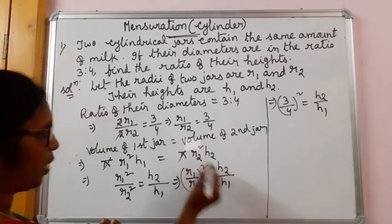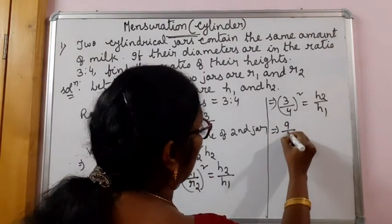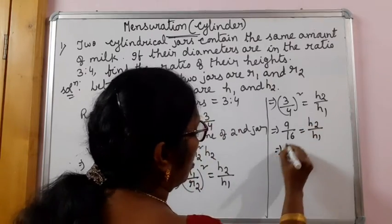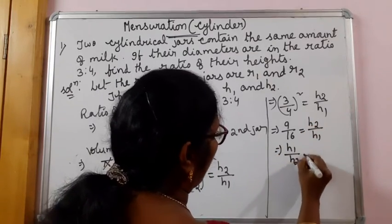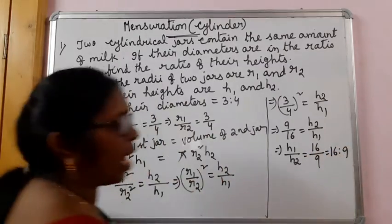H2, we have to be very careful here. This H1 we brought this side. That implies, 9 by 16 is equal to H2 by H1. Or, H1 by H2 is equal to 16 by 9. That is, 16 is to 9.